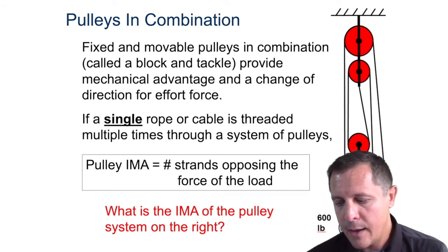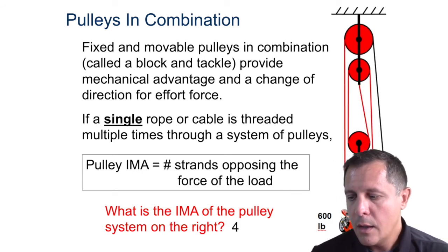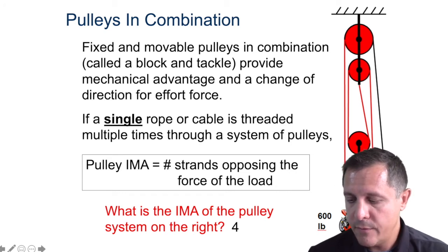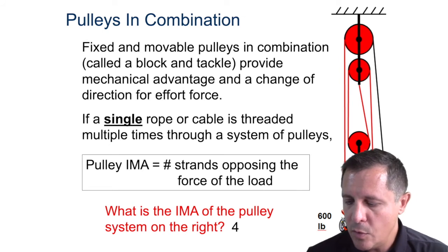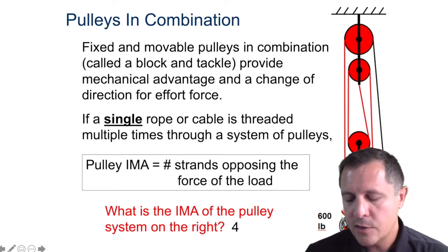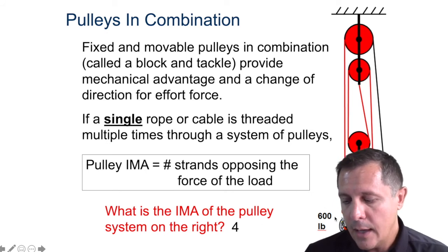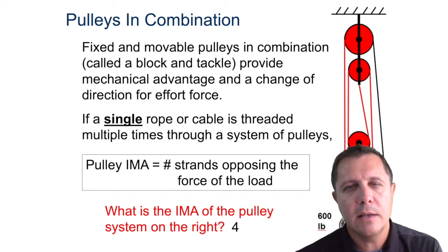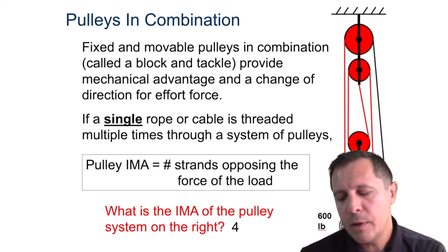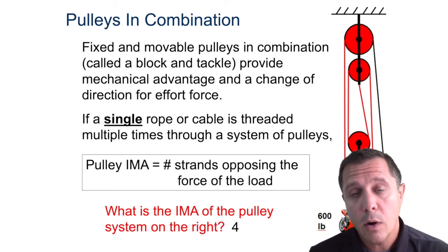Here's a motorcycle example with a lot of strands — but how many are actually helping to support the motorcycle? Only four. The fifth strand is not helping hold up the motorcycle; that's what you'd be holding and pulling down to lift with. That strand isn't at the bottom and isn't splitting the motorcycle's weight. So the IMA is four, and ideally you'd only need to pull with 150 pounds — 600 divided by four — to lift the motorcycle.